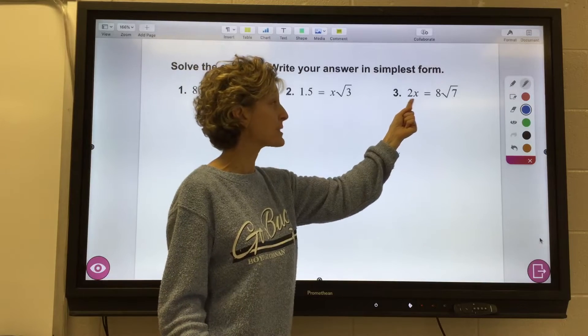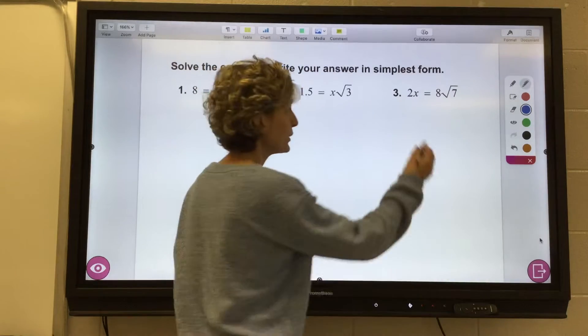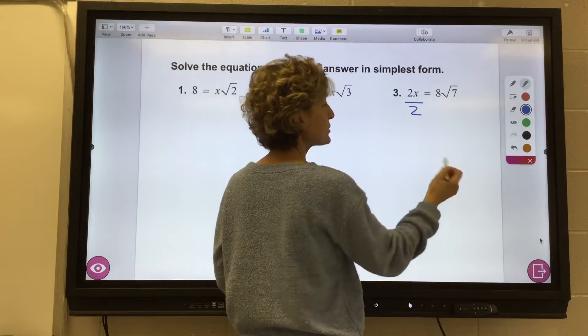Right now, x is being multiplied by 2. How do I undo it? You all remember that. Divide by 2.